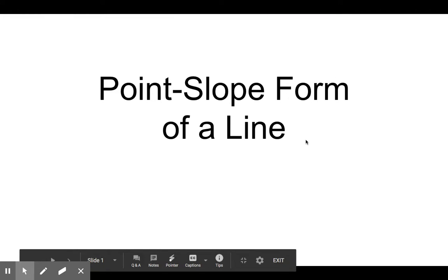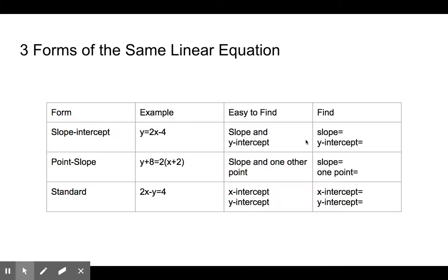Today we're going to learn about the point-slope form of a line. There are really three main forms that we use for looking at linear equations. One of them that you have already learned is the slope-intercept form.